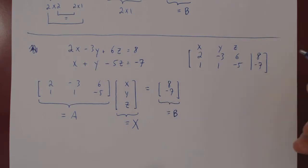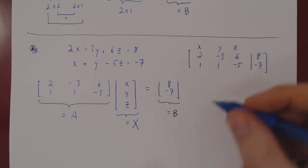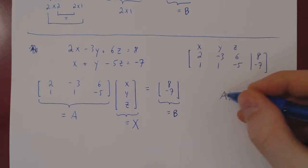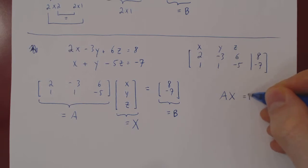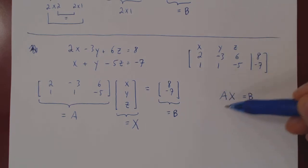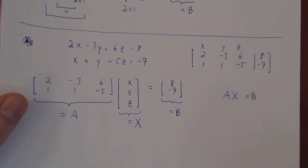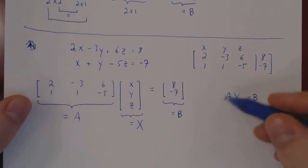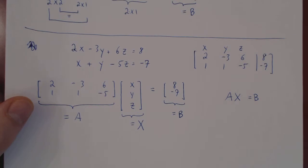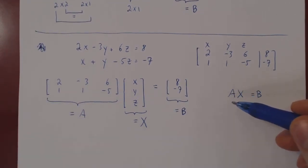Our conclusion is that any linear system can be put in augmented matrix form and also in the form of a matrix equality, Ax equals b. Now let's consider what happens when matrix A is an invertible square matrix — we can solve the linear system in a different way.